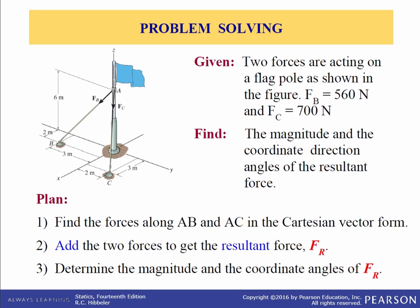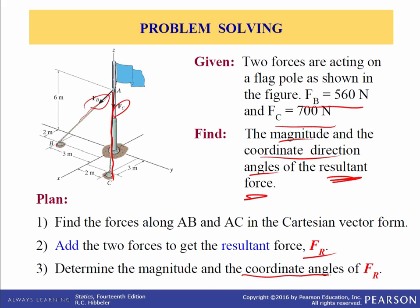Now this next problem wants the resultant force. We have a similar flagpole with two guy wires: one between A and B and one between A and C. We're given the tensions — F_B is 560 Newtons and F_C is 700 Newtons — and we want the magnitude and coordinate direction angles of the resultant force. We'll write F_B and F_C in Cartesian form using the same procedure, add them together to get the resultant, and then determine the coordinate direction angles and resultant magnitude.